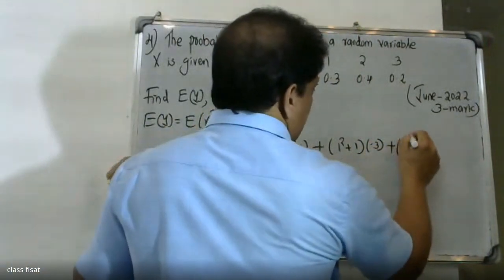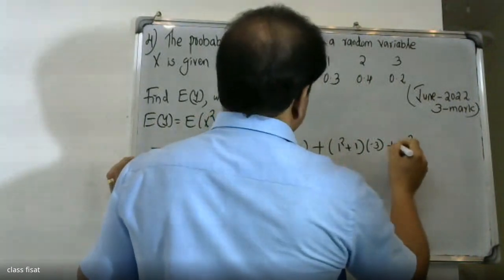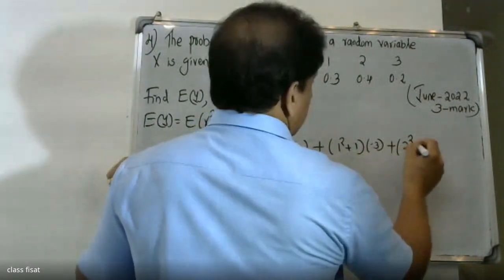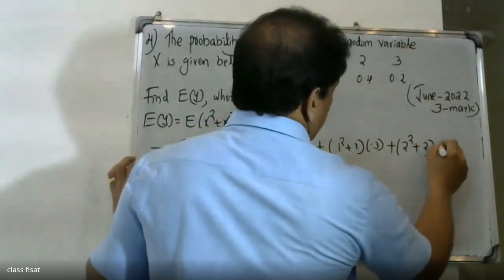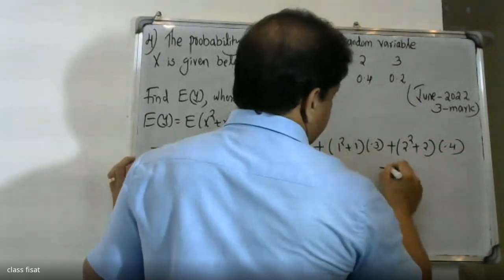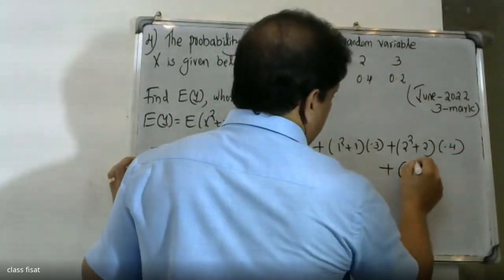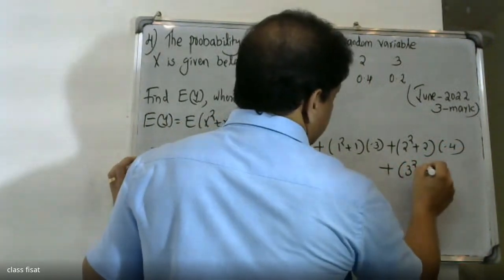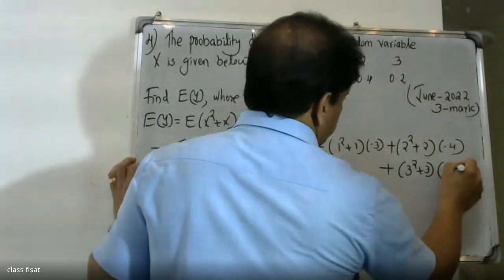For x = 2: (2 squared + 2) = 6, times f(2) = 0.4. For x = 3: (3 squared + 3) = 12, times f(3) = 0.3.